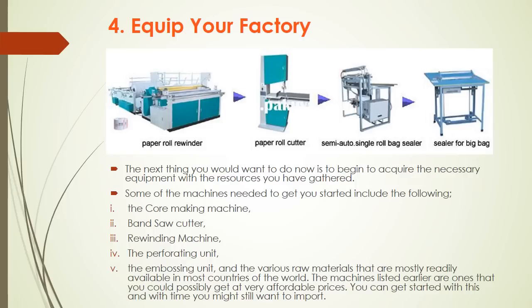Step four: equip your factory. You will want to begin acquiring the necessary equipment and machines with the resources you have gathered. Some of the machines needed to get you started include: the core making machine, band saw cutter, rewinding machine, the perforating unit, and the embossing unit. The various raw materials are most readily available in most countries of the world. The machines listed are ones you will possibly get at very affordable prices. You can get started with these and with time you might still want to import additional equipment.